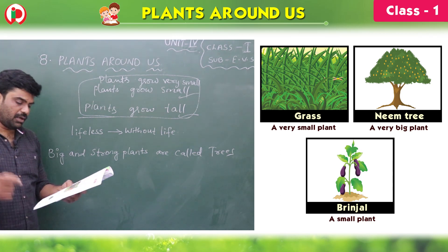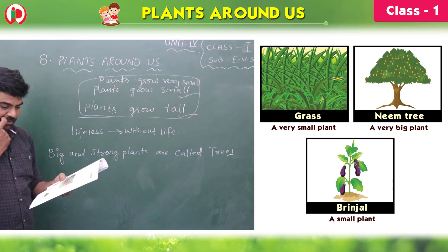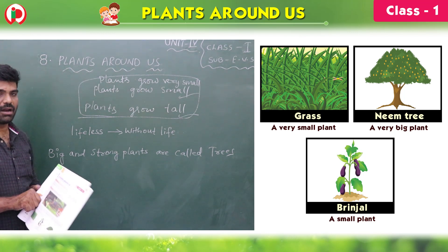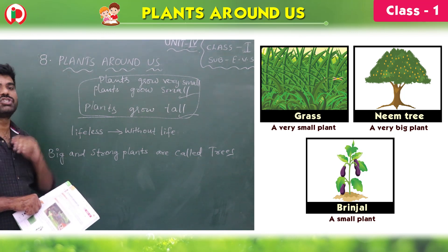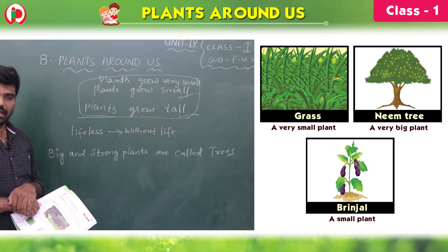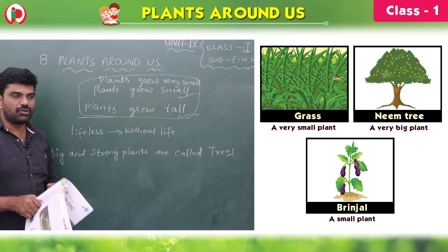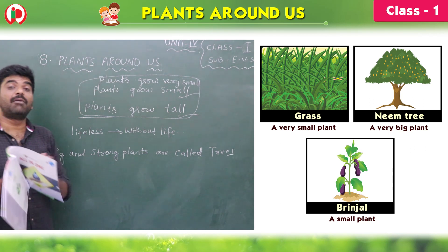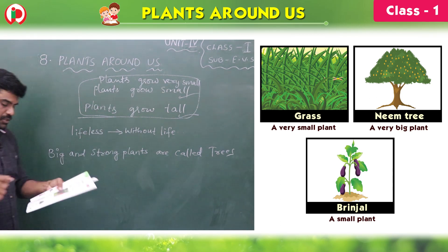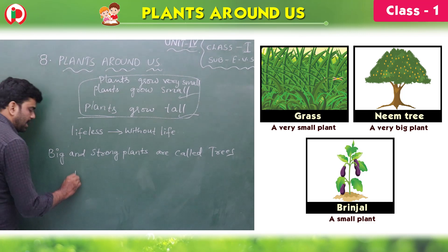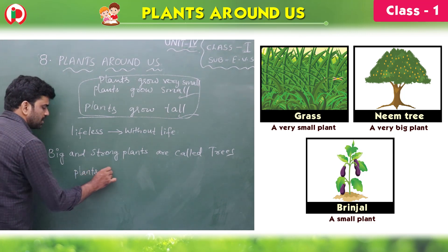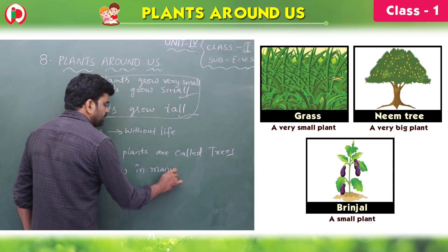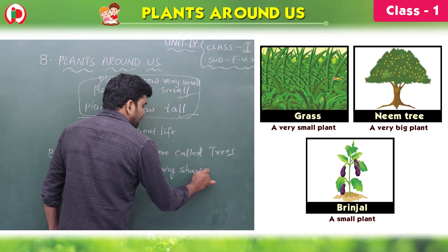See children, page number 33. Plants grow in many shapes and sizes. All plants are not the same shape. You observe your surroundings — all plants are not the same shape and all plants are not the same size also. Plants grow in many shapes and sizes.